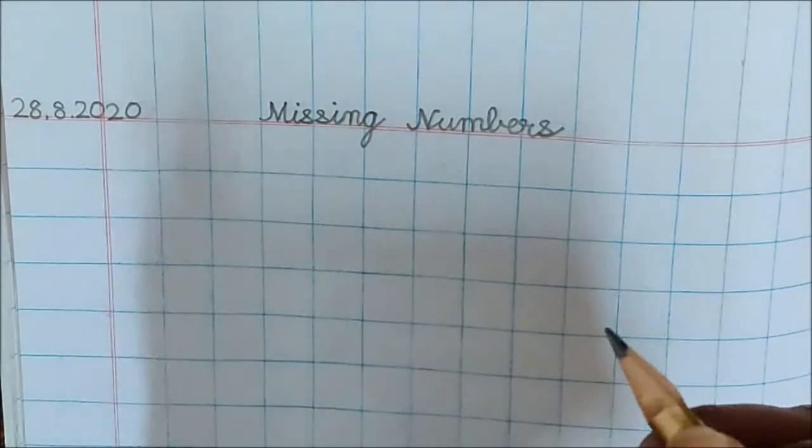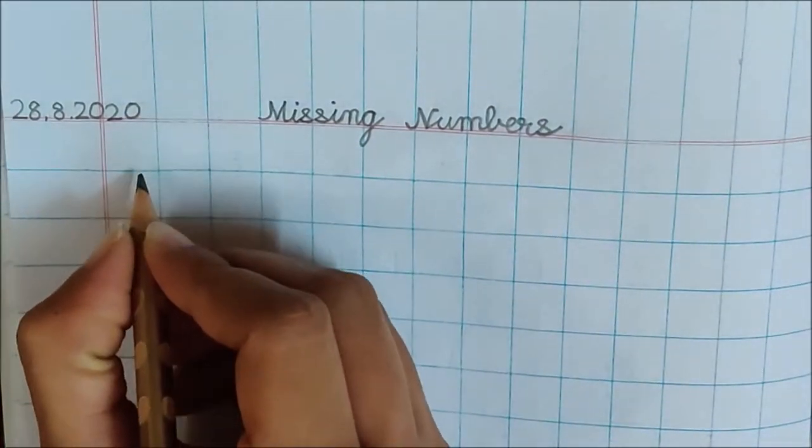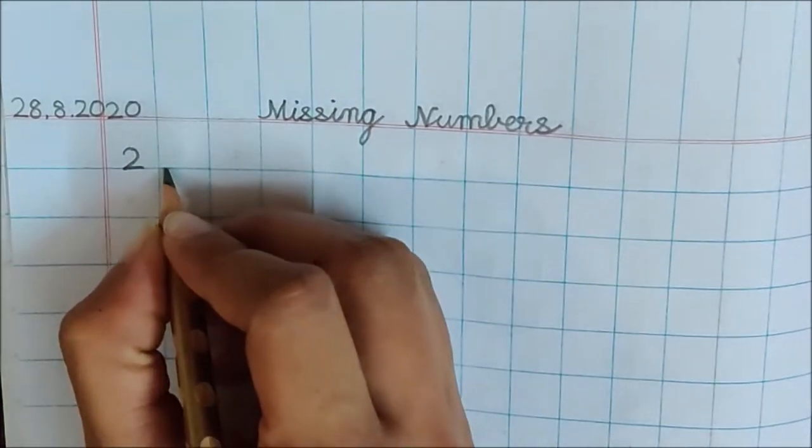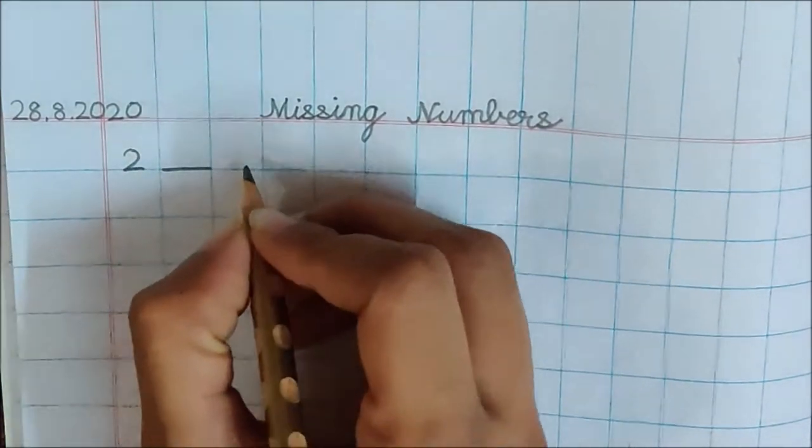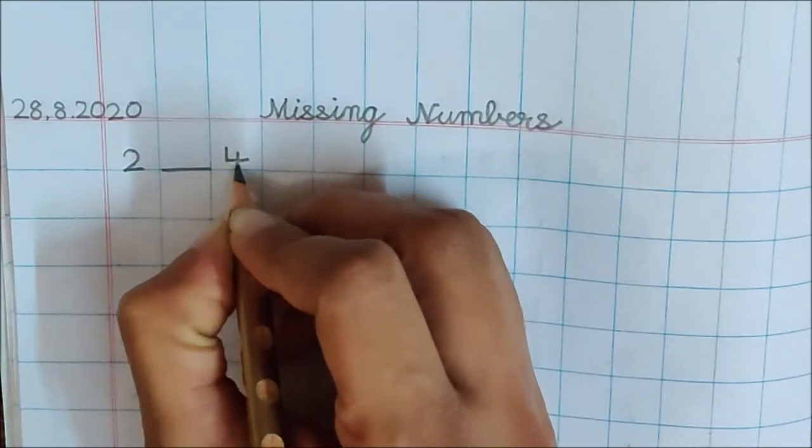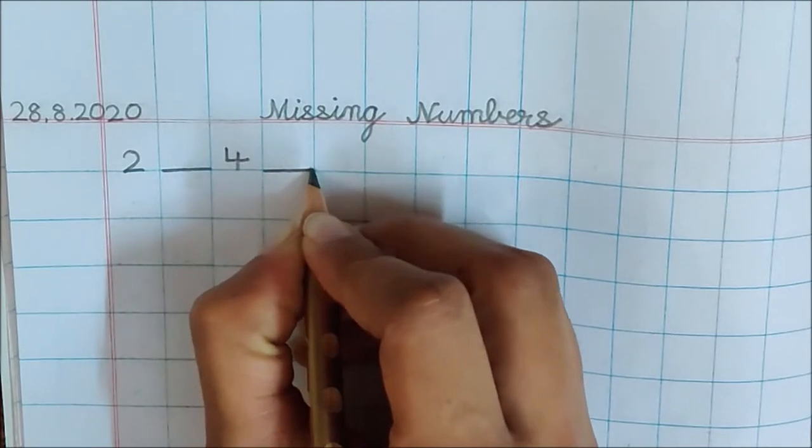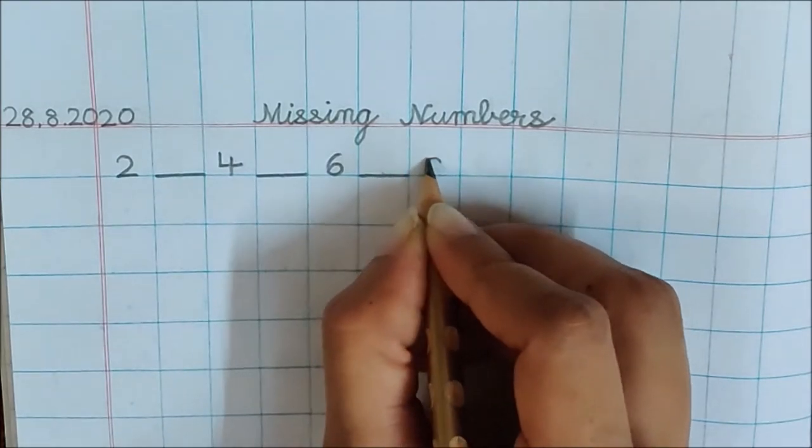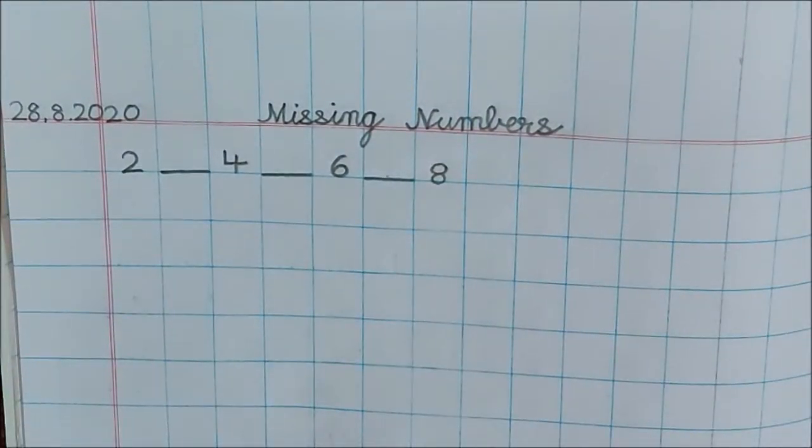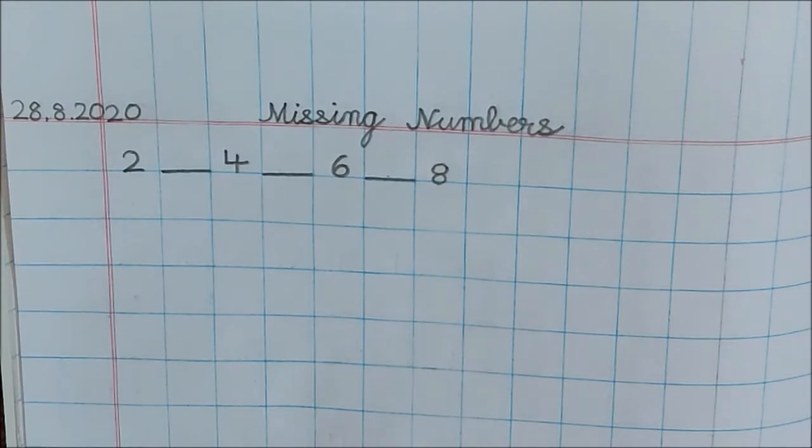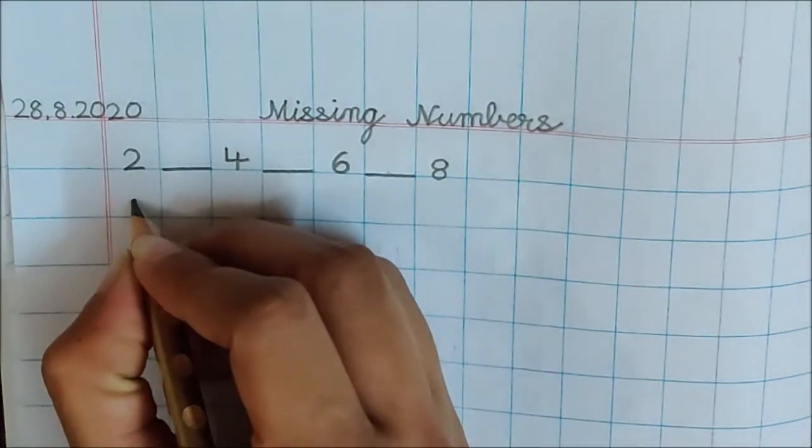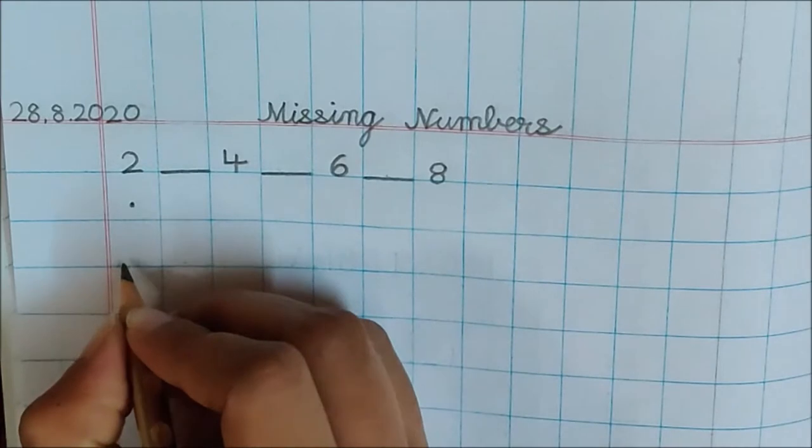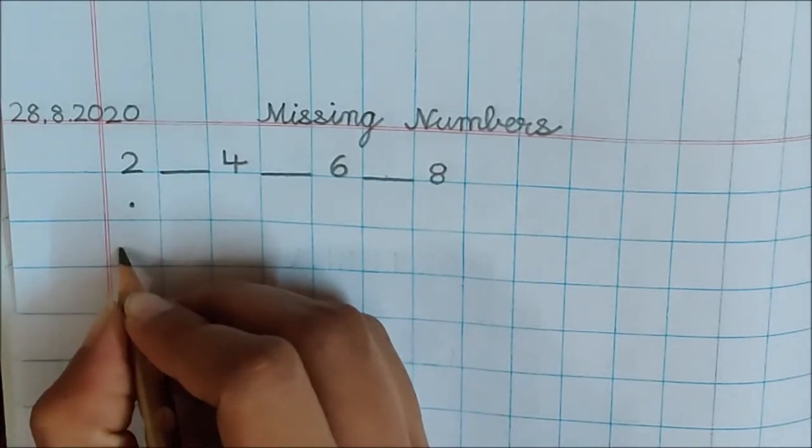So take your pencil and do the setting with me first. In the first box, children, write down here 2. Now put a dash here. In the next box, write down 4, dash, 6, dash, 8. Done? Very good. Now children, below 2, put a dot. We will not do writing in this line. Now in the next box, write down here 14.